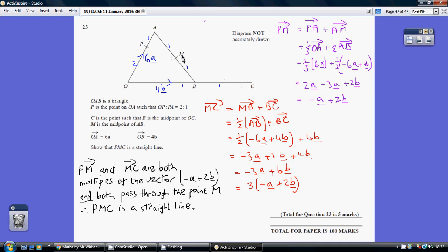MC comprises MB plus BC. We know that MB is half of AB and we know that BC is the same as OB which is, in other words, 4B. So, AB is minus 6A plus 4B. We need half of that and like we said, we then add on BC and we're told that that length is the same as that. So, that's another 4B.